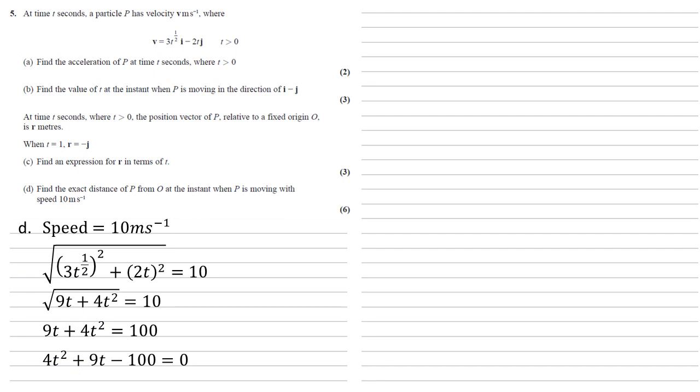You could use the quadratic solver on your calculator. It's completely up to you. I factorized to get 4t plus 25 times t minus 4 equals 0. This gives us two answers: negative 25 over 4 or 4. But we need a positive t because we're told that t is larger than 0, so we can't have the minus 25 over 4. Our value for t must be 4.